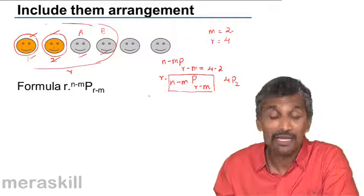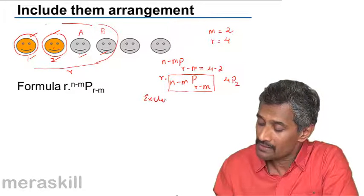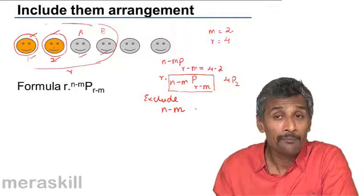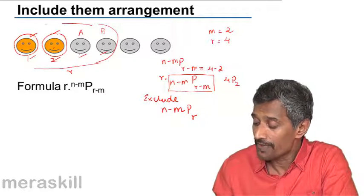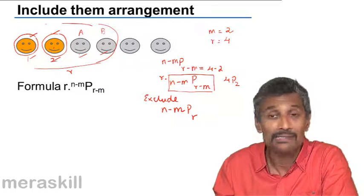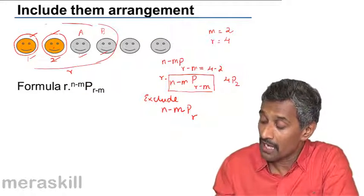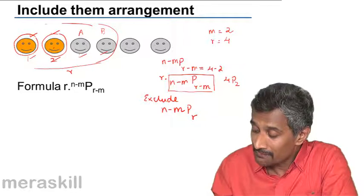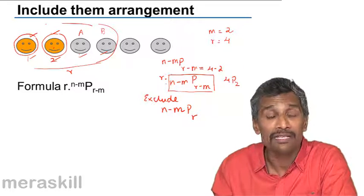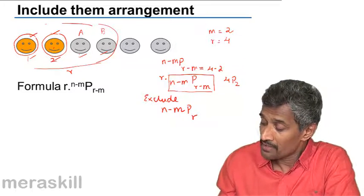So this is one formula. If you compare with excluding: the exclude arrangement has (N minus M) P R, because you need to select R out of N minus M and R is not featuring as a multiplier. But when you talk about including, it is R times (N minus M) P (R minus M), because after the selection there are R ways in which you can arrange each of the selections.